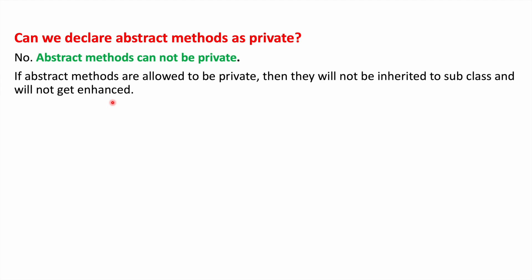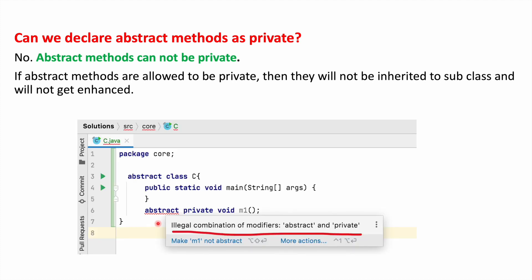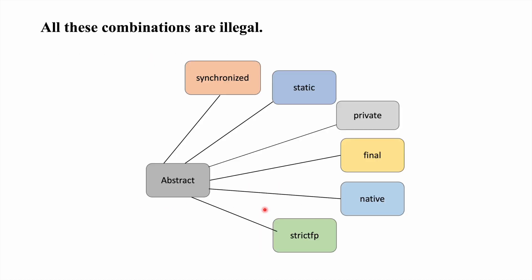So abstract and private are completely opposite in nature, and we cannot declare abstract methods as private. If you see in this example, we are trying to add the private modifier to an abstract method, and it is giving an error: 'illegal combination of modifiers — abstract and private'. So abstract and private cannot be used together.